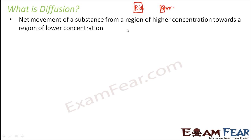Should the rich give money to the poor, or the poor give money to the rich? The rich should give money to the poor, because the amount of money is more with the rich person and less with the poor person. So money moves from a region of higher concentration towards a region of lower concentration. This concept holds true for every substance, and this phenomenon is known as diffusion.